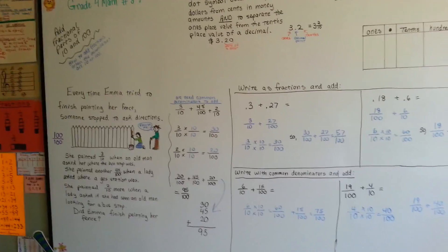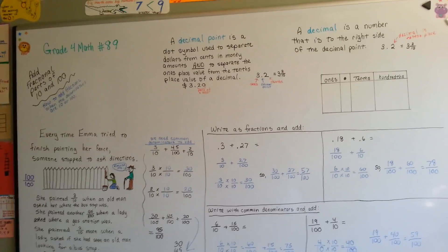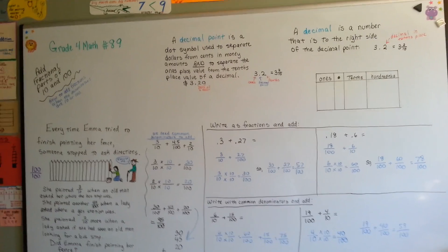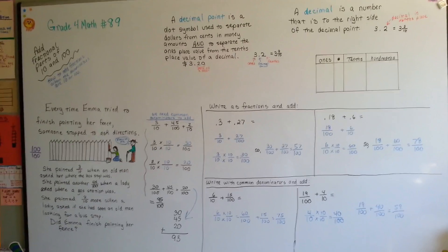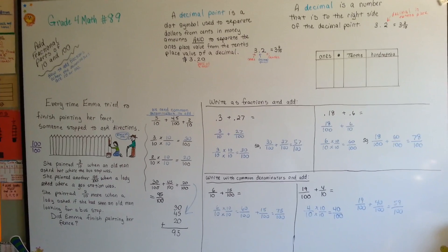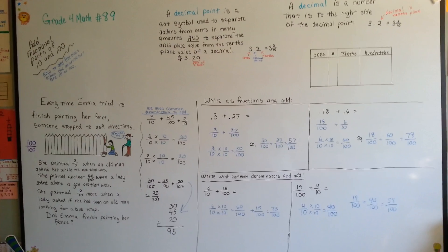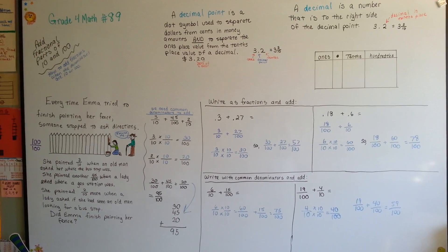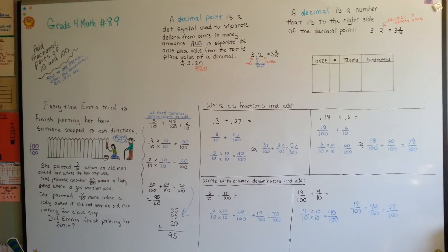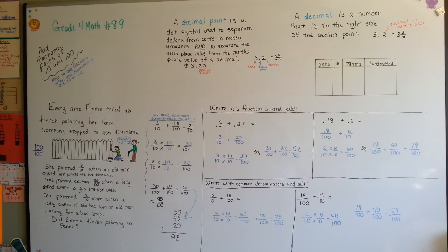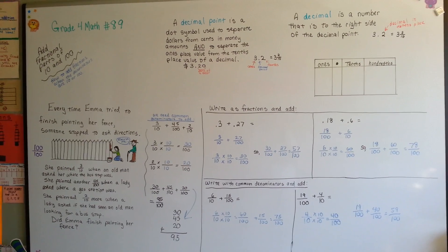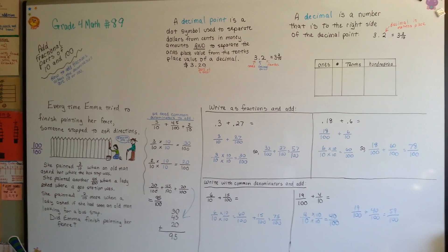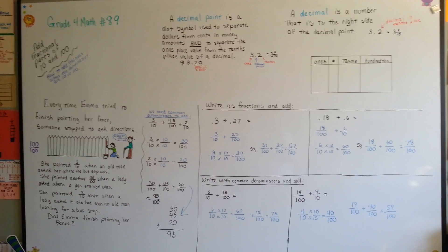So now you know how to add fractional parts of tens and hundreds. We're going to talk about some different sizes of decimals and what order they should be in next, and then pretty soon we're going to be at geometry. So stick with me — I'll see you next video.